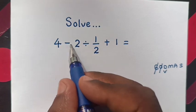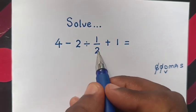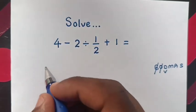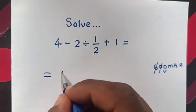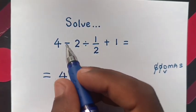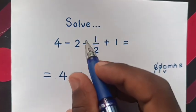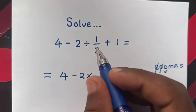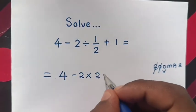So from this problem, we will divide minus 2 divided by a half. So it will be equal to 4 minus 2. This will be multiply 2 plus 1.